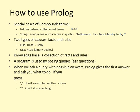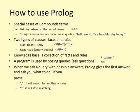Facts are used to state things that are unconditionally true of some situation of interest. An example of a fact is cat(tom), which is equivalent to the rule cat(tom) :- true. Given this fact, someone can ask 'Is Tom a cat?' by writing ?- cat(tom), and the Prolog program will answer yes.